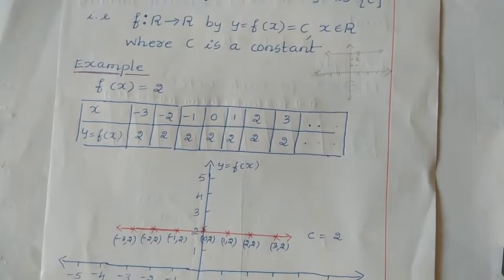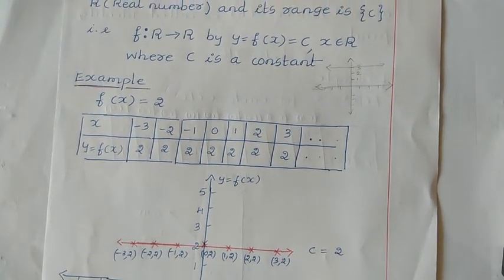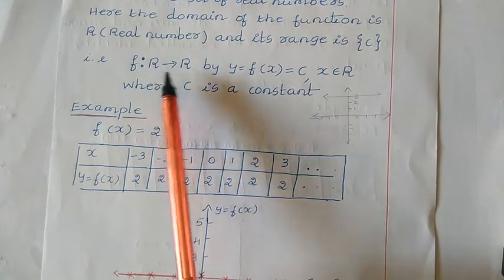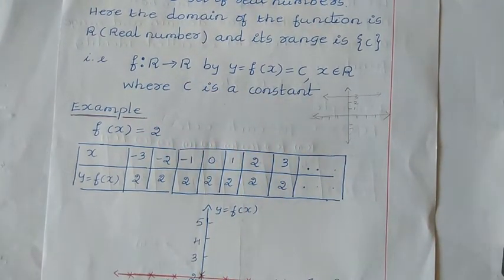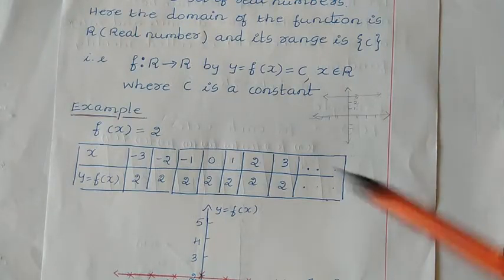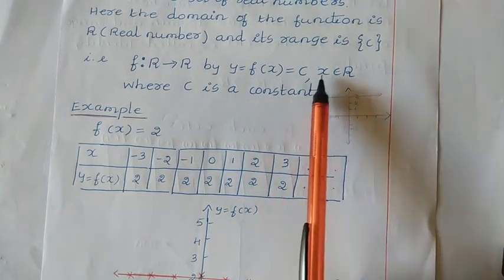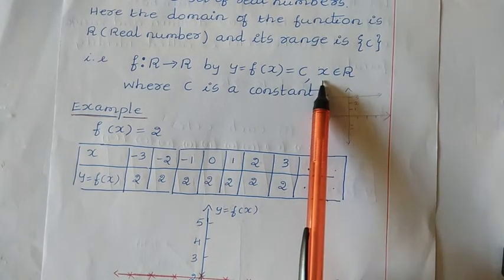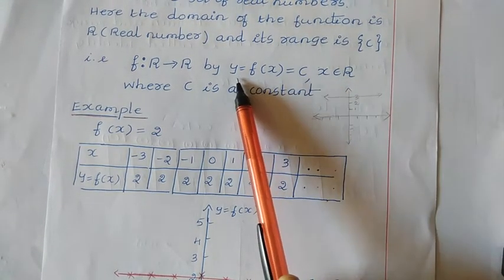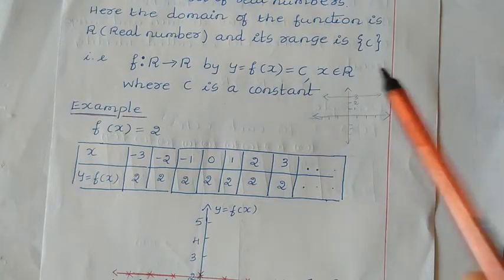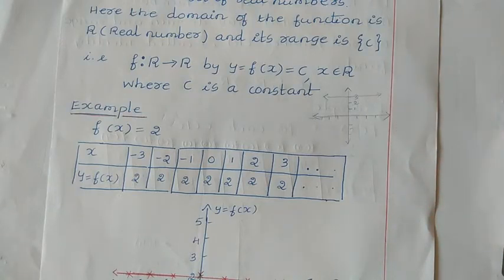So that's about a constant function. A function f defined from real number to real number — the domain is a real number whereas in the case of range, it is a real number but only one value, a constant. It may be any real number but it is a constant. So y equals f of x equals c, where c is a constant value, x belongs to the real number, and y is the range which is a constant real number value.